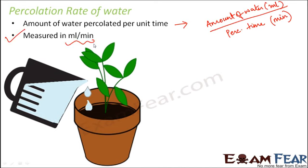The percolation rate for different types of soil would be different — loamy soil, sandy soil, and clayey soil all have different percolation rates. Why do we want to know this? Because it helps us decide which type of soil is best for a particular plant. If we want to plant a tree which needs more water to go deep inside, we need to choose a soil with a very high percolation rate. A soil with a higher percolation rate will hold water for a longer time, but knowing the percolation rate helps us decide the crop suitable to be grown on that particular soil.